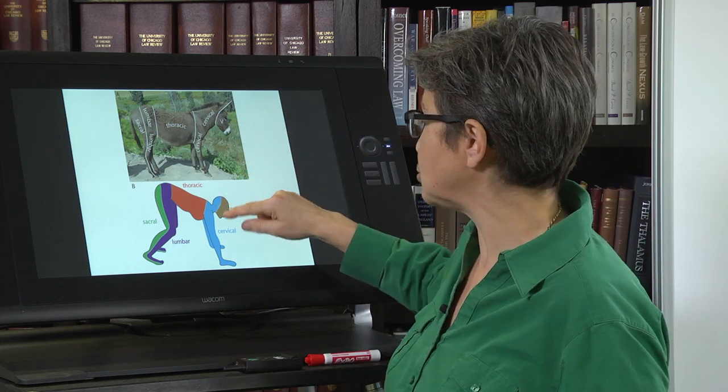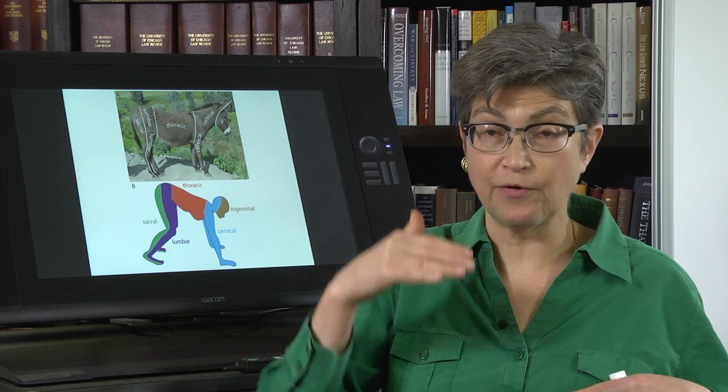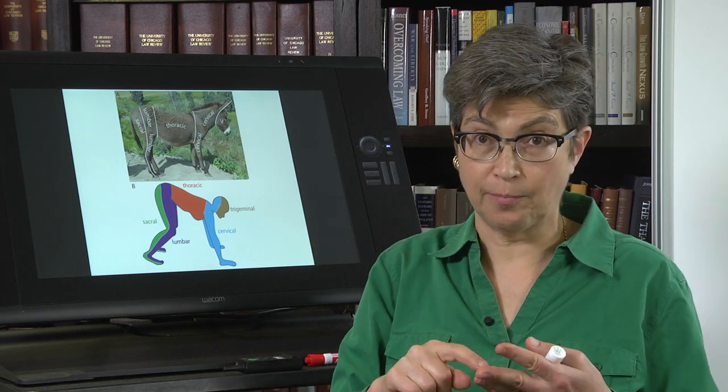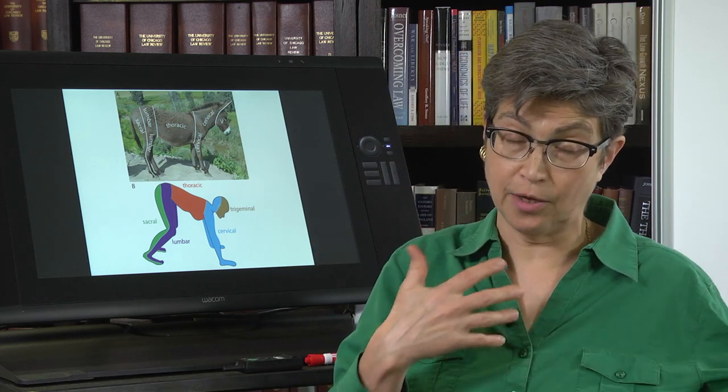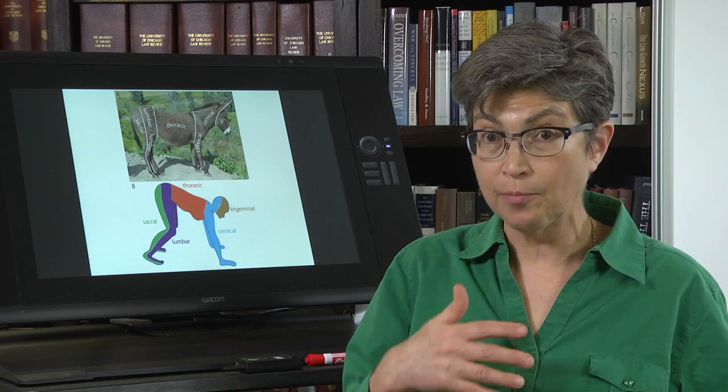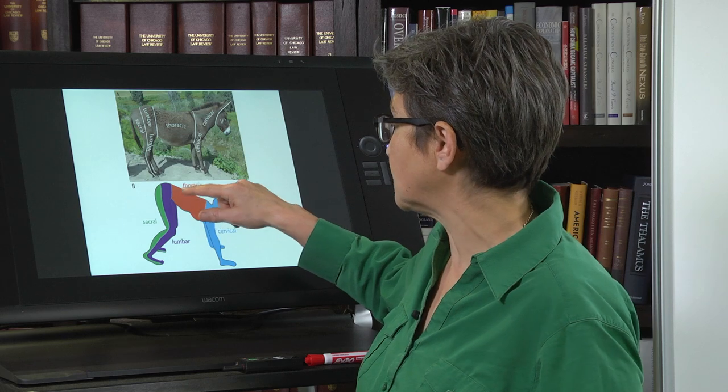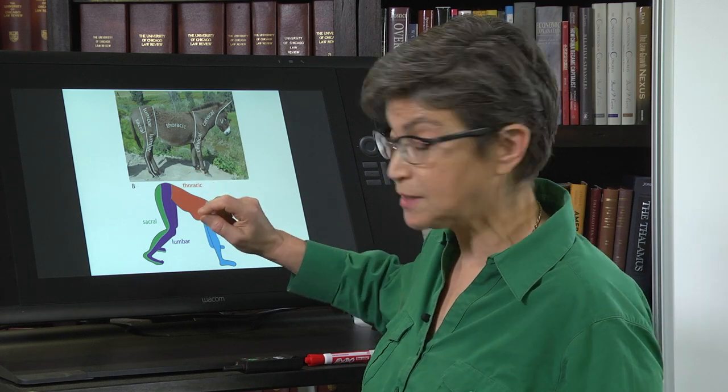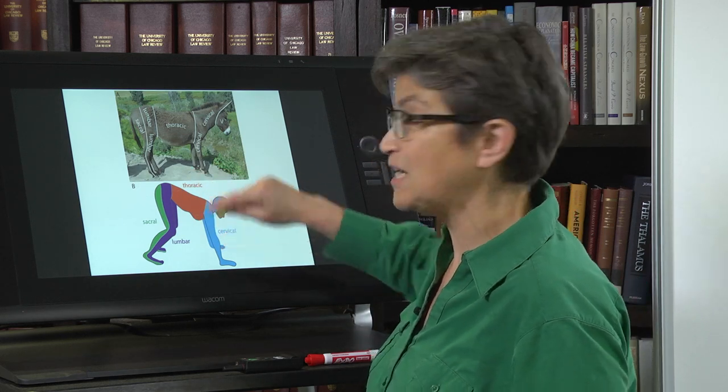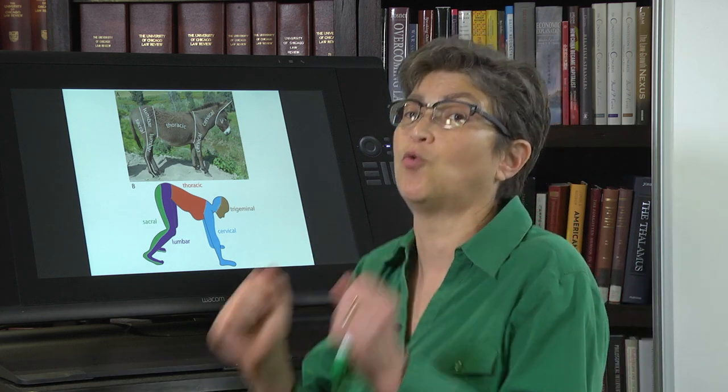The spinal cord is divided into cervical, thoracic, lumbar, sacral, and in other animals, also coccygeal, but not in us. So cervical, thoracic, lumbar, and sacral segments, and the organization of them is the same as in a quadruped.